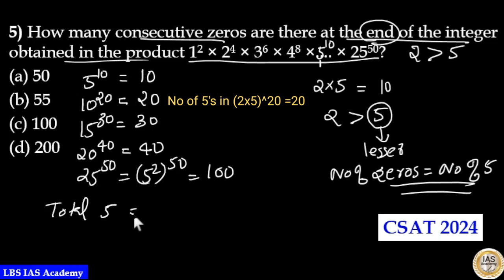So total number of 5 is equal to 10 plus 20 plus 30 plus 40 equals 100, plus 100 equals 200.